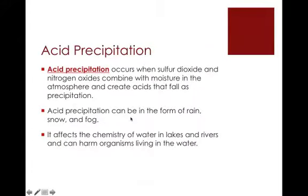We did a lab on acid rain. The reason they say precipitation is because you have rain, snow. We call it acid rain mostly in Florida since we don't have snow very often. It occurs when sulfur dioxide and nitrogen oxides combine with moisture in the atmosphere and create acids that fall as precipitation. We're not talking about very strong hydrochloric acid. We're talking about a pretty weak acid. But even though it is a weak acid, it can actually affect the chemistry of water in lakes and rivers and can be very harmful to organisms that live in the water. Fish and different aquatic plants and organisms are very susceptible or sensitive to changes in the pH or the acidity of water.